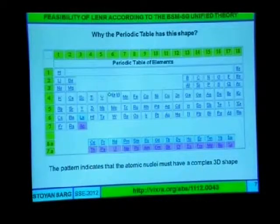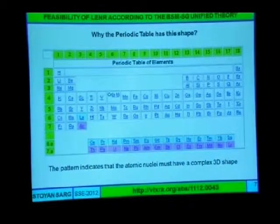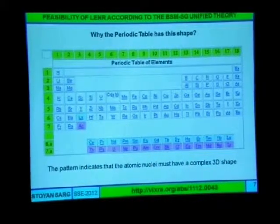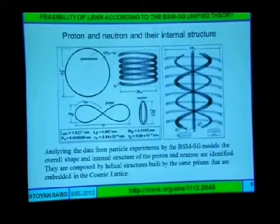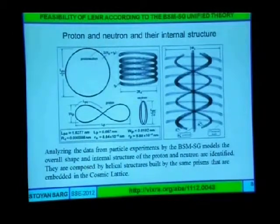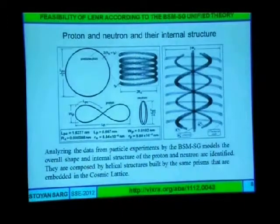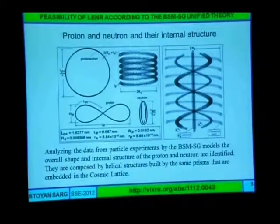Why is the periodic table so strange? The answer is that it should have some 3D shapes of the structure. This is the structure of the proton I found. This is the structure of the neutron — it is the same toroid, but it is twisted. Here it is double folded. This is the internal structure.